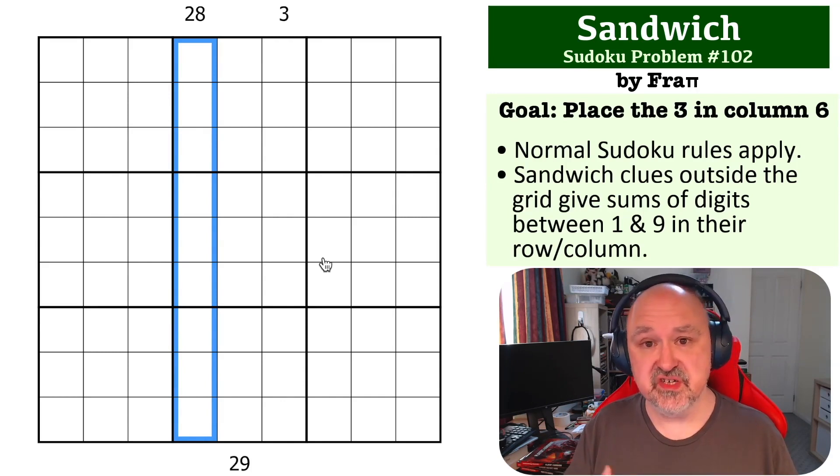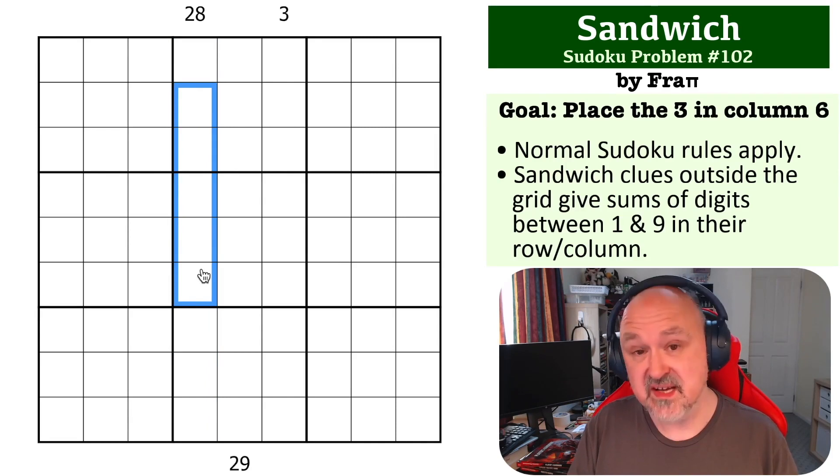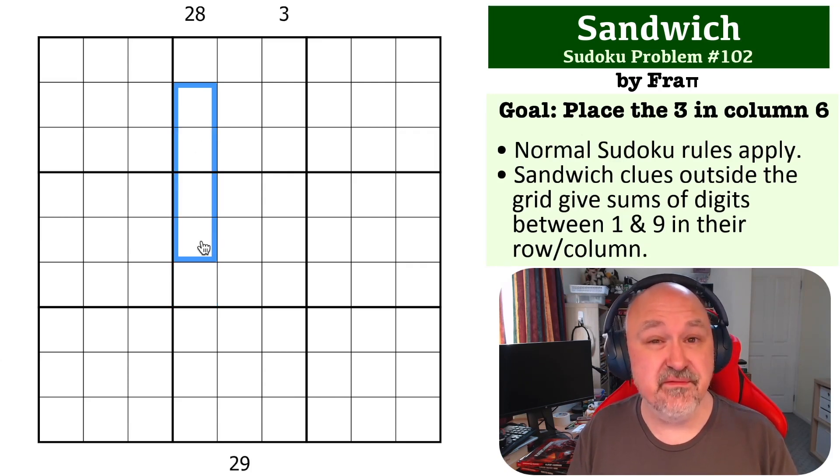The maximum digits you could use if you were trying to do this in four cells would be 8, 7, 6, and 5. Now, 8, 7, 6, and 5 if you add them together: 8 and 7 is 15, 6 and 5 is 11, add 15 and 11 and you get 26. It's not enough, so you can't do this in four cells. You have to do it in at least five.